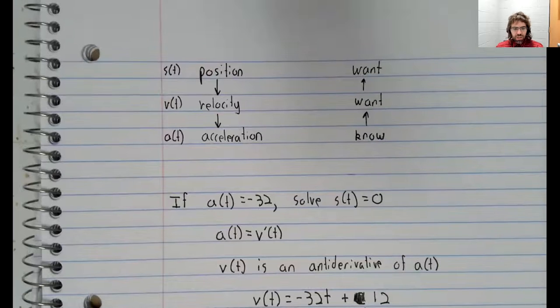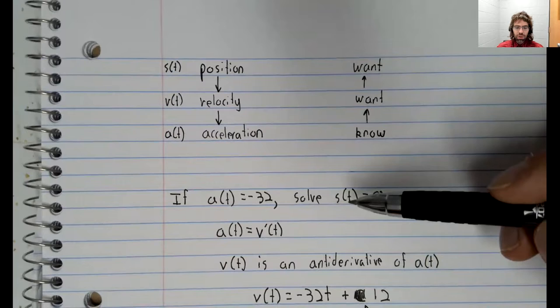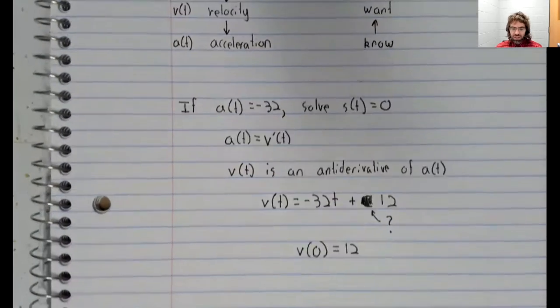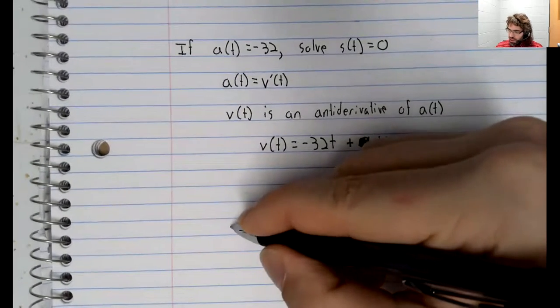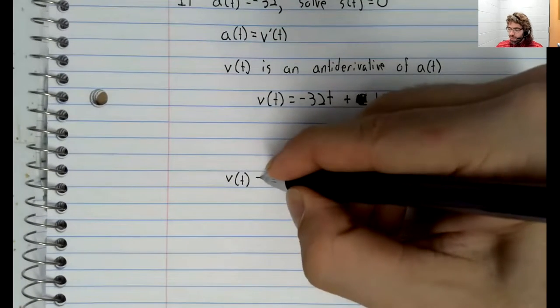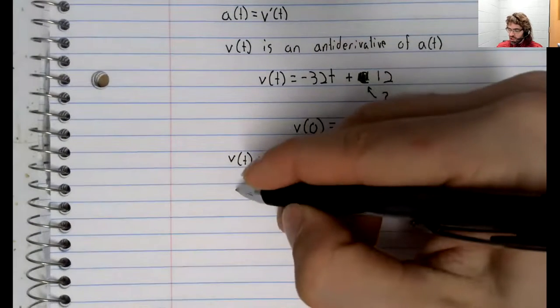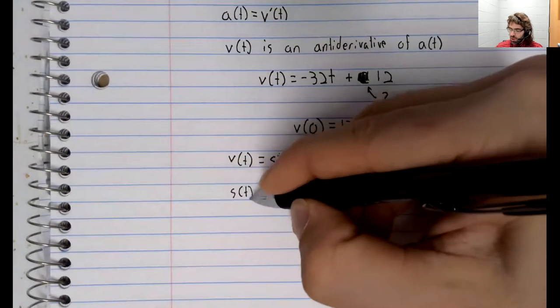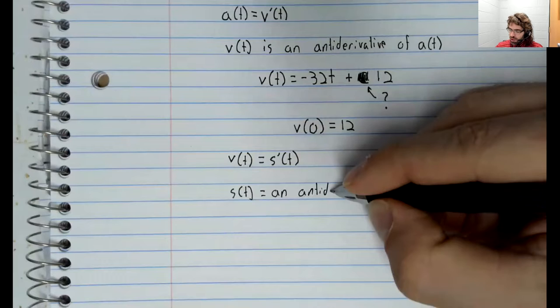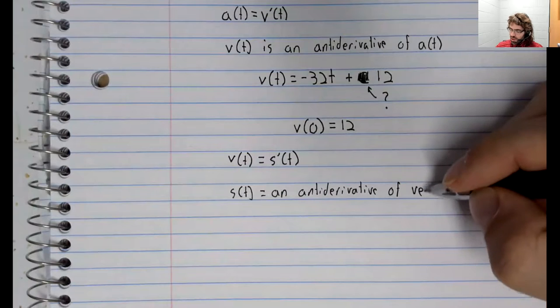Now, why did we find the velocity function? Well, we're ultimately looking for information about the position, and the position is the antiderivative of the velocity. So we did this as an intermediate step. We found the velocity. The velocity is the derivative of the position, so the position is an antiderivative of the velocity.